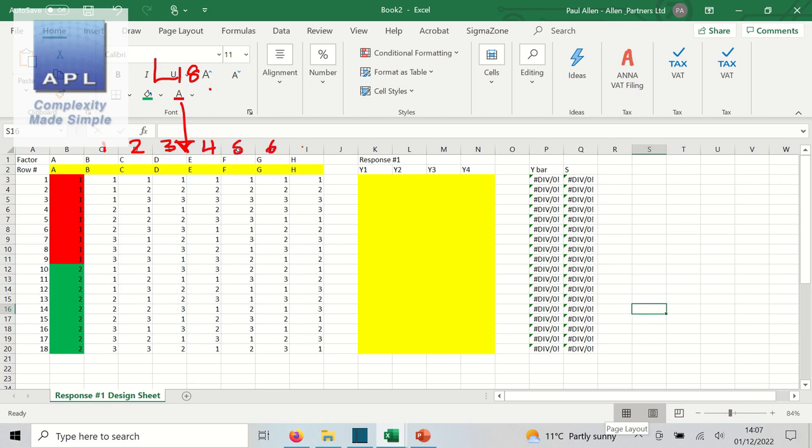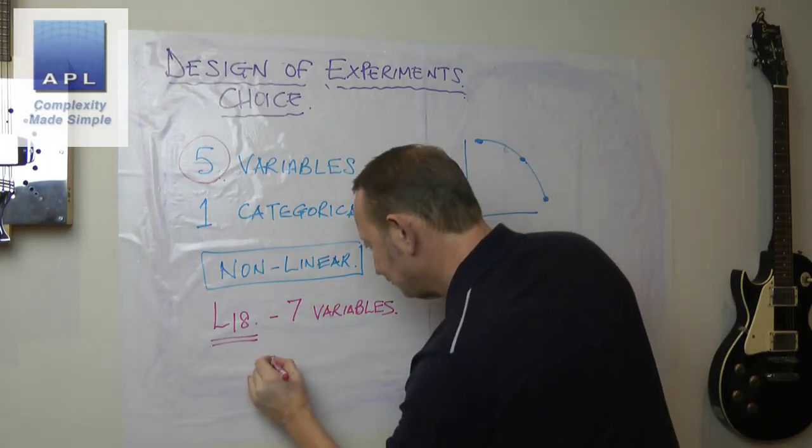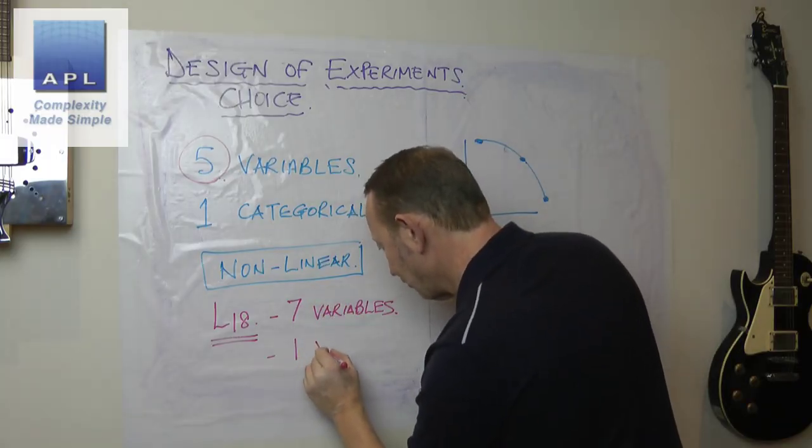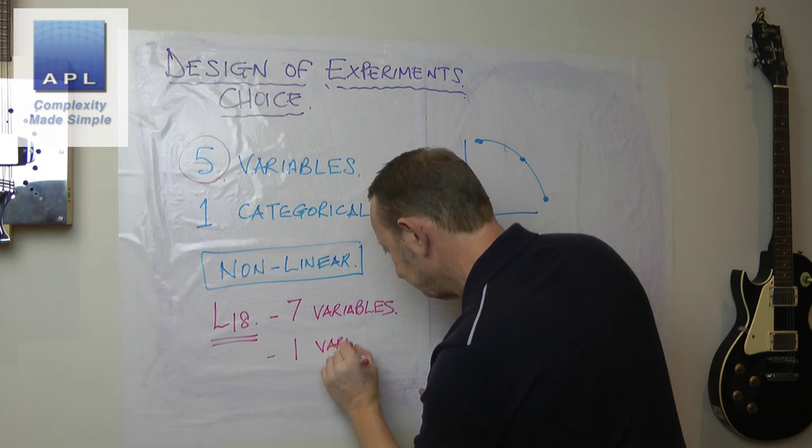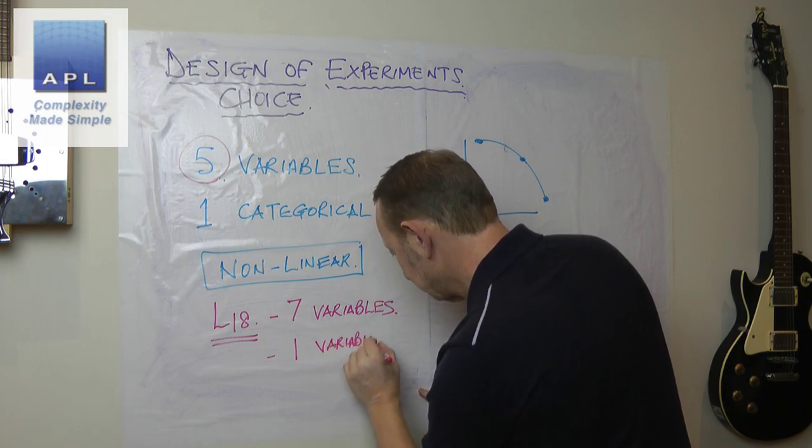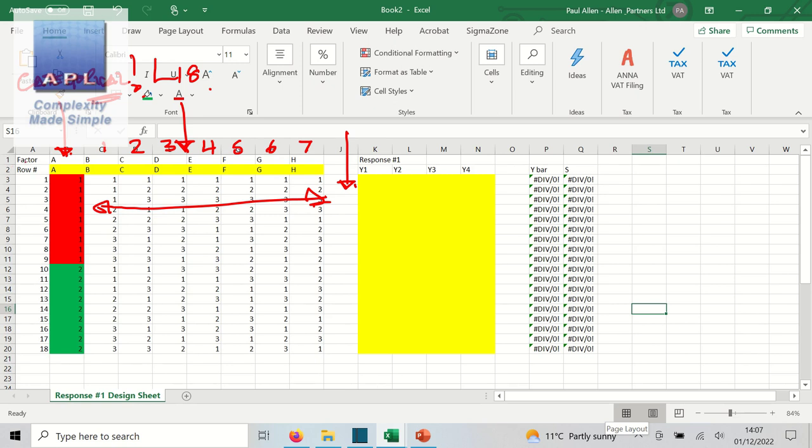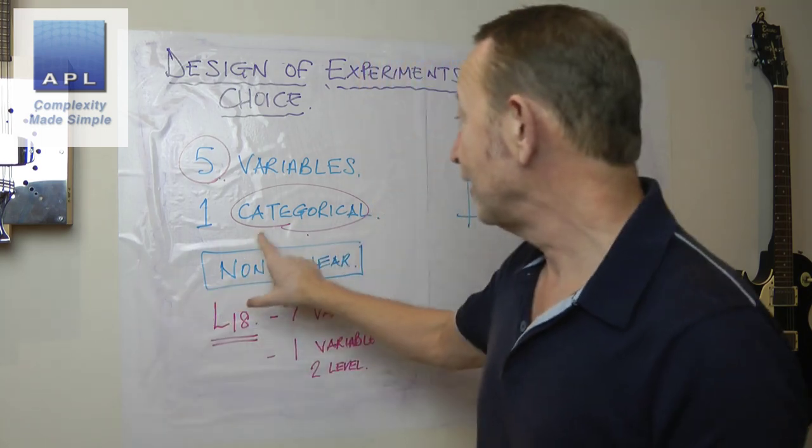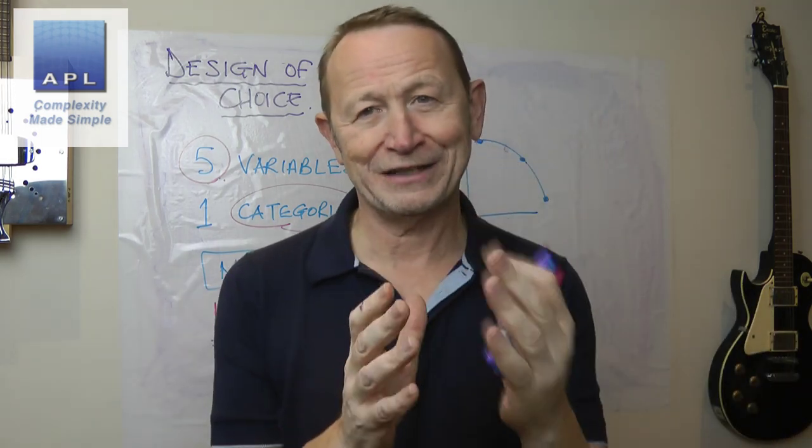Why the L18? Well, seven variables can go in the L18, so it meets this requirement. Also, one variable can be at two levels. In other words, it can be categorical: supplier one versus supplier two. So the first column of the L18 is just at one and two levels, and therefore you can put the categorical variable in there.